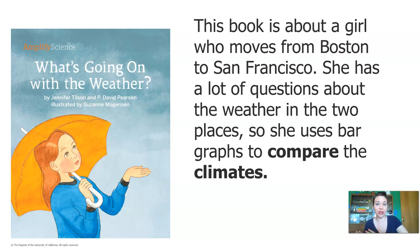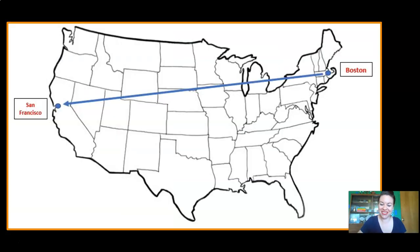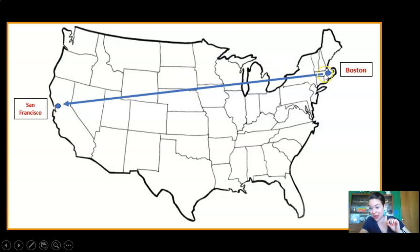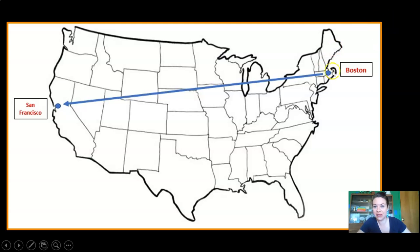This book is about a girl who moves from Boston to San Francisco, and the weather in those two places is really different. Look at this map of the United States. Boston is way over here on the east coast in Massachusetts. San Francisco is way over here on the west coast in California. The main character moved all the way across the United States.